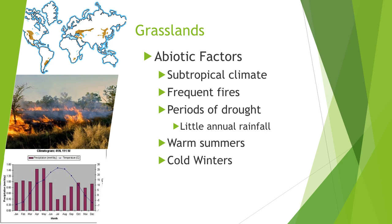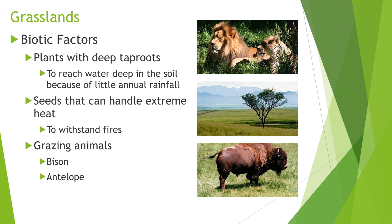Next up we have grasslands. Abiotic factors include a subtropical climate, frequent brush fires, periods of drought with little to no rainfall, and warm summers with cold winters. Much of the western United States is considered to be grasslands. Biotic factors include plants with very deep tap roots to reach water below the water table during droughts, seeds that can handle extreme heat from brush fires, and grazing animals such as bison or antelope.